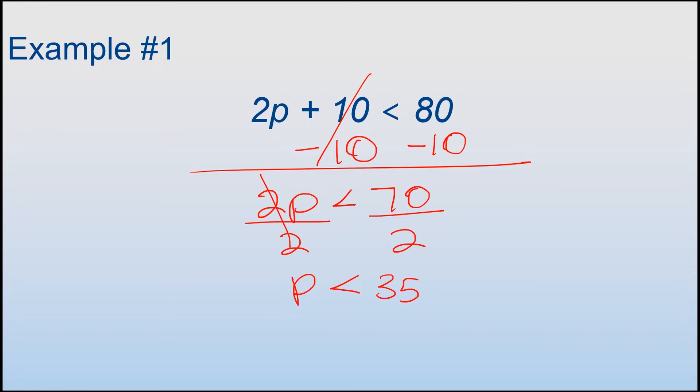70 divided by 2 is 35. So what this answer tells us is to make this statement true, p needs to be less than 35.